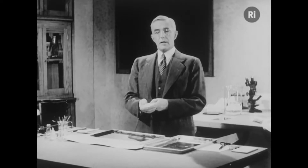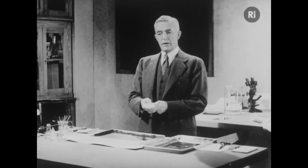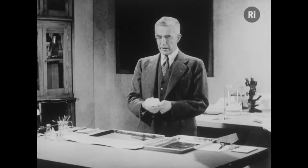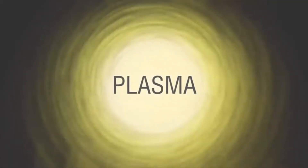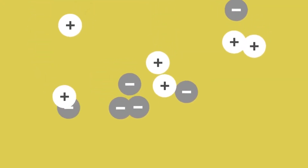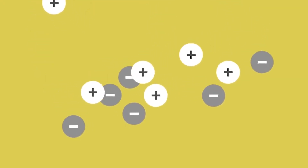Plasma is a word that was introduced by a famous chemist. His name was Irving Langmuir, and he was working for General Electric. Irving Langmuir liked the idea of plasma to describe an assembly of electrons and ions.